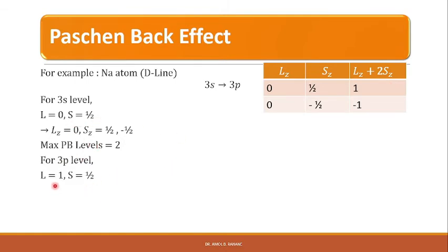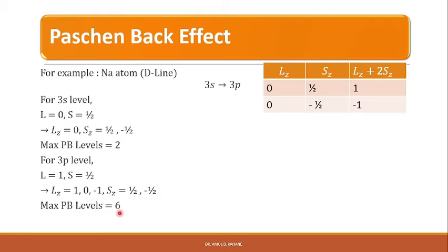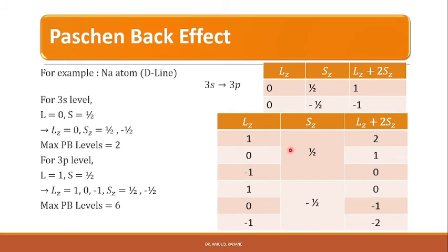For the 3P level, L = 1 and S = 1/2, so LZ takes three values (1, 0, −1) and SZ takes two values (±1/2). Maximum Paschen-Back levels = (2L+1)(2S+1) = 6. For SZ = +1/2, the LZ + 2SZ values are 2, 1, 0; for SZ = −1/2, the values are 0, −1, −2. So we get six Paschen-Back levels in total.